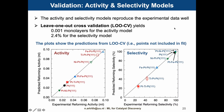Validation of the activity and selectivity models. The activity and selectivity models represent the experimental data very well, as you can see here. These two plots, left and right, show predictions from leave-one-out cross-validation. The error estimates are 0.001 monolayer for the activity model and 2.4% for the selectivity model.